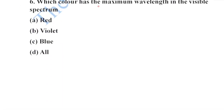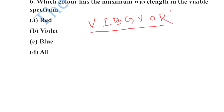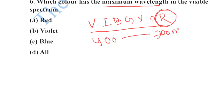Next: which color has maximum wavelength in the visible spectrum? Using VIBGYOR, red color has the maximum wavelength. The visible spectrum ranges from around 400 to 700 nanometers. Option A is your correct option.